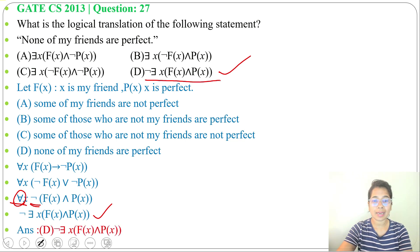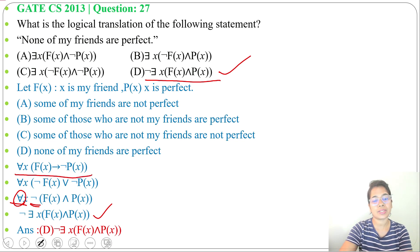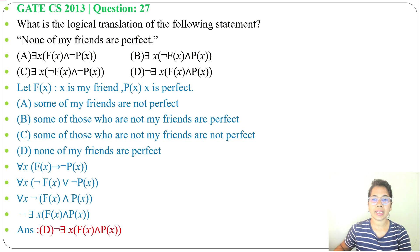It is given indirectly. The actual formula is: for all x, f(x) implies negation of p(x). But we can convert it to the form in option D. I have already discussed predicate logic — just go through that lecture.